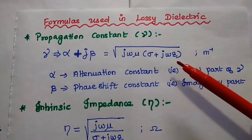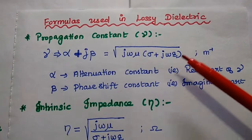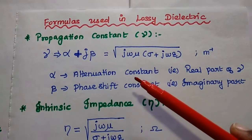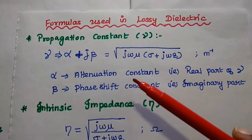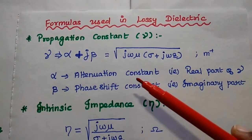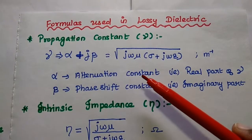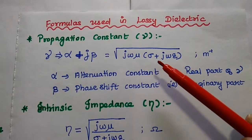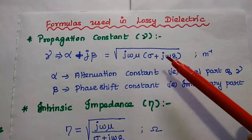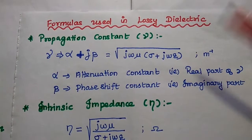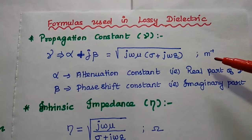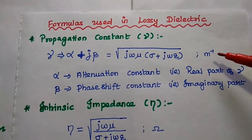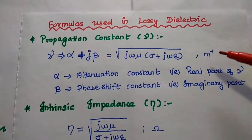The first one is propagation constant gamma. It can be represented as alpha plus j beta, that is equal to the square root of j omega mu into sigma plus j omega epsilon. Its unit is 1 per meter, that is meter power minus 1, inverse of meter.